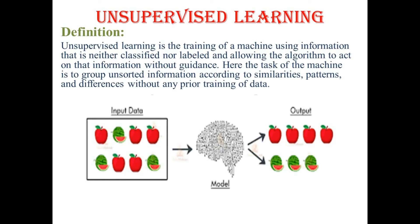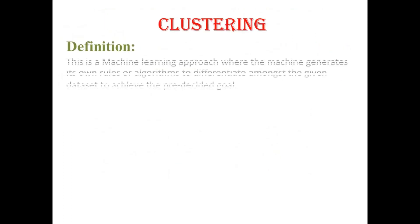Next is unsupervised learning. In unsupervised learning we don't give the output — based on patterns and whatever it sees, the machine classifies data into different categories. Unsupervised learning is the training of a machine using information that is neither classified nor labeled. The difference from supervised learning is that in supervised learning we give labels like this is cat, this is dog, but here we are not giving any label — it identifies patterns, similarities, and features on its own.